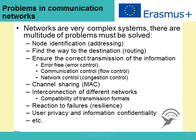What kind of problems can we find in communication networks? Networks are very complex systems with a multitude of problems that must be solved. For instance, node identification — also called addressing — is necessary to name different nodes so the network knows where to send information. Finding the way to the destination — called routing — is another very important mechanism. Also, ensuring correct transmission of information requires error control mechanisms.